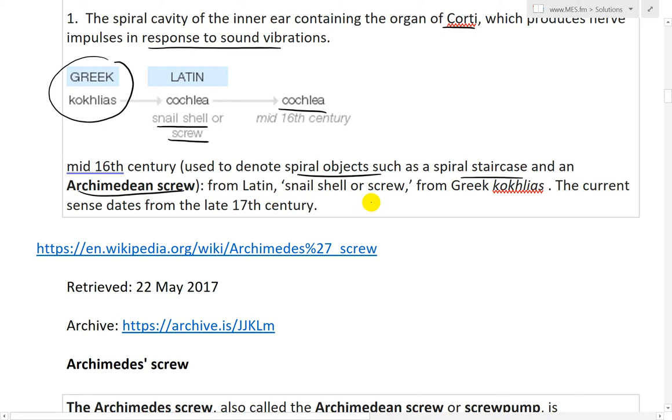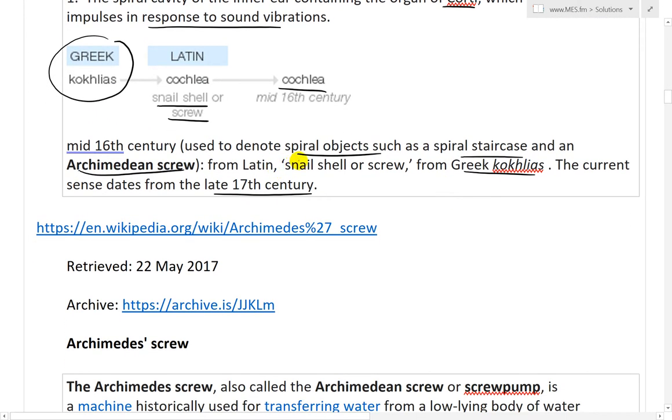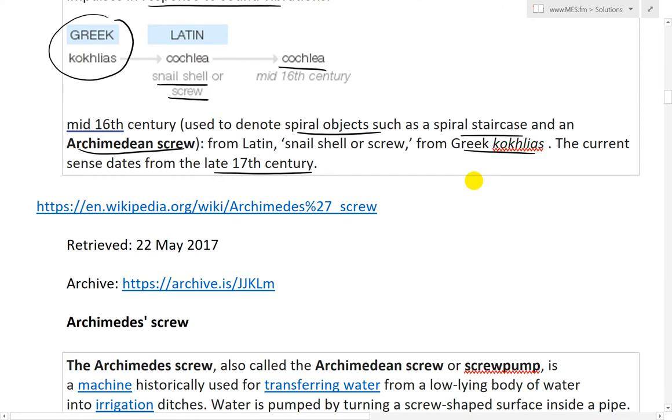And the definition here it says a spiral cavity of the inner ear contains the organ of Corti which produces nerve impulses in response to sound vibrations and it was from Greek Kochlias and then it goes to Latin Cochlia the snail shell or screw. And then yeah, then basically in mid 16th century was used, meaning snail shell or screw, so mid 16th century used to denote spirals, objects such as a spiral staircase and an Archimedean screw.